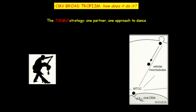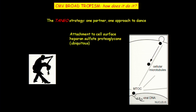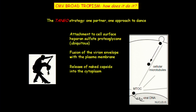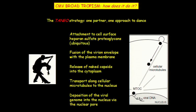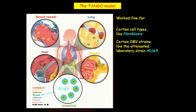For quite a long while, how the virus gains access to so many different cells was explained by what I call a tango strategy — basically one panel and one way to dance. The virus attaches to cell surface proteoglycans, which are ubiquitous, and then it was shown that the virus could fuse its lipid envelope with the plasma membrane. This lipid-lipid fusion allows the capsid to be released as a naked capsid within the cell, which tracks along cellular microtubules into the cytoplasm, reaches the MTOC, and deposits the genome into the nucleus. Once in there, transcription starts and infection begins.